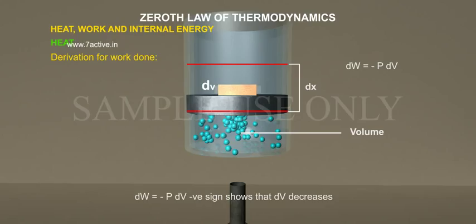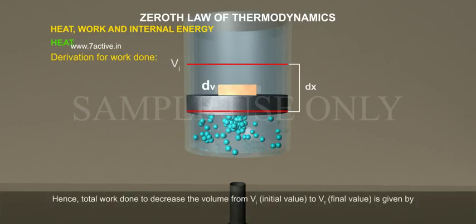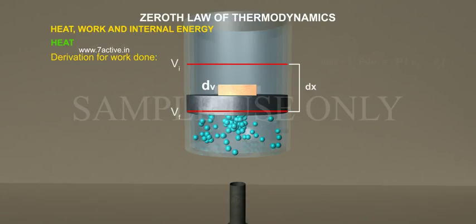Negative sign shows that dV decreases. Hence, total work done to decrease the volume from Vi initial value to Vf final value is given by integration of P dV from Vi to Vf is equal to minus P into Vf minus Vi, or W is equal to P into Vf minus Vi.